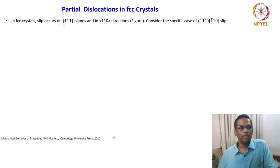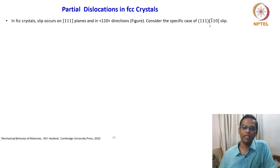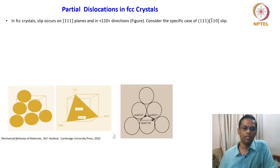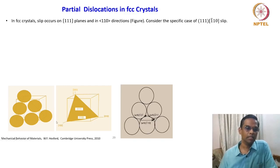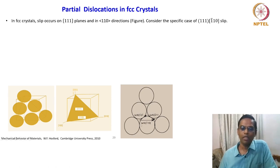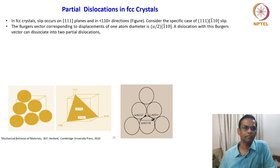In FCC crystals, slip occurs on {111} planes and in <110> directions. Consider the specific case of the slip system (111̄) [110] direction. This is the schematic of the {111} plane and this is the [110] direction. The Burgers vector here, corresponding to the displacement of one atom diameter, is A/2[1̄10].